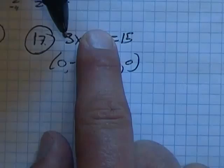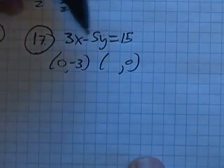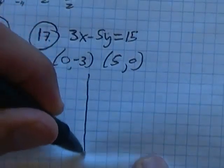Let y be zero. If y is zero, three x equals 15. Looks like x must be five. So I know it has to go through those points.